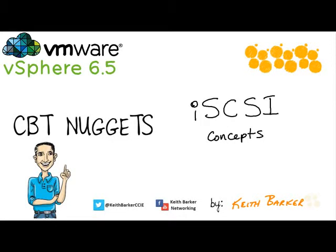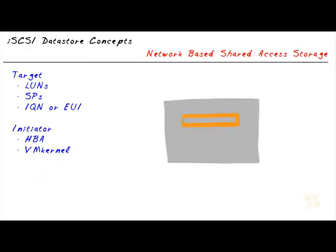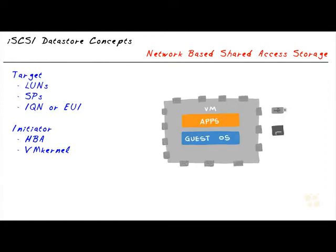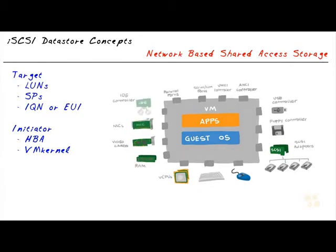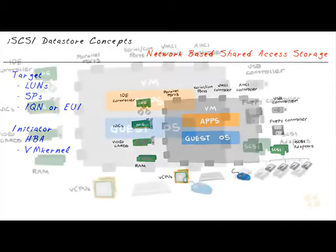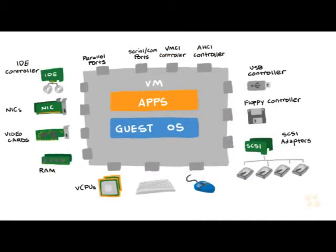Let's begin with iSCSI concepts. In our journey through this course so far, we've identified a lot of really cool features regarding virtualization, including the fact that we can create a virtual machine where it thinks it has network adapters, video cards, hard disk drives — all of that environment. Everything that virtual machine thinks it has has been provided to it by the hypervisor, and in a vSphere environment that hypervisor is the ESXi host or hosts.